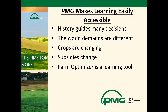Things are changing and Farm Optimizer makes learning those changes so much easier. History has guided many decisions in the past and always will be a good guide, but the world demands in our business are changing. Crops are changing — just look at soybeans in western Canada. Subsidies have changed. We're going into a farm bill. There are a lot of things changing globally and in our own backyard.